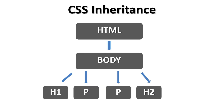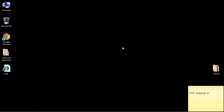So let's say we want to universally change the color of the font for all elements embedded within the body element. To do that, we create a rule affecting the font color against the body element, and then all of the child elements will inherit that. I'll show you that right now.